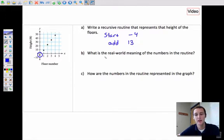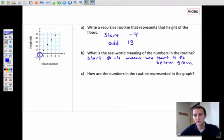What is the real world meaning of the numbers in the routine? This start at negative four means that we are starting in the basement at negative four feet. We start four feet below ground level. Add 13 then means that for each one floor we go up, we go up 13 more feet. The add 13 means for each floor we rise 13 feet.